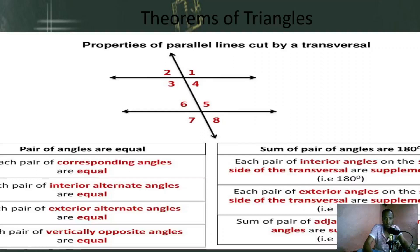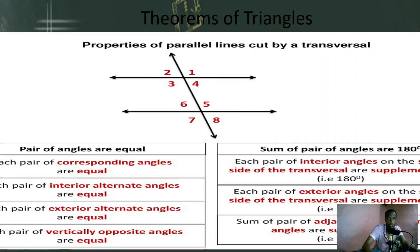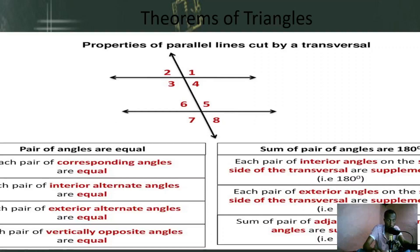And the other ones — one and seven, two and eight — they are alternate exterior angles. And the other thing is opposite vertical angles. Six and eight, five and seven, two and four, one and three — they are vertical opposite angles, so they are always congruent.